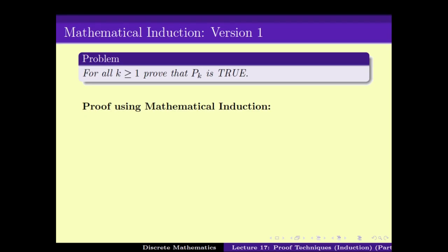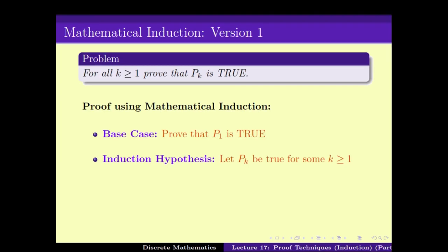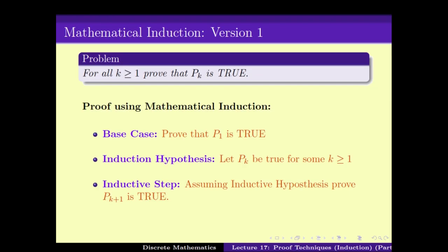Now why does this proof technique actually work? It works because of the principle of mathematical induction, which guarantees that it will work. It is a kind of axiom: if you first prove P1, and then for any k prove that Pk implies Pk+1, then you have proved that Pk is true for any k. So a few steps help us prove all infinitely many cases.